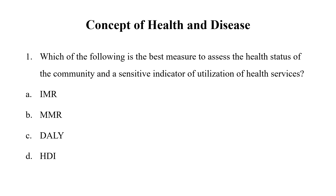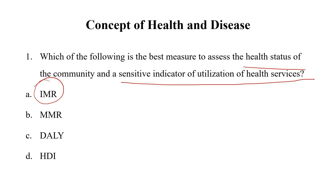First is Concept of Health and Disease. Which of the following is the best measure to assess the health status of the community and a sensitive indicator of utilization of health services? Options are Infant Mortality Rate, Maternal Mortality Rate, DALY, and HDI. Without any doubt, you must be able to mark the answer as Infant Mortality Rate (IMR). These keywords — health status of the community and sensitive indicator of utilization of health services — are directly taken from Park's textbook, and IMR is the best measure.